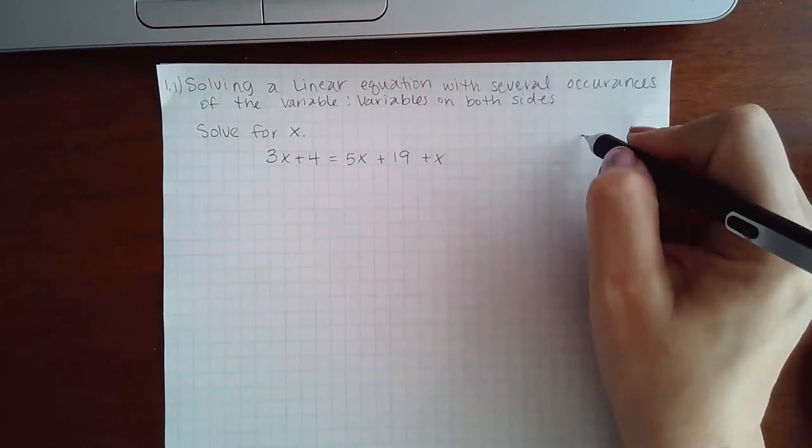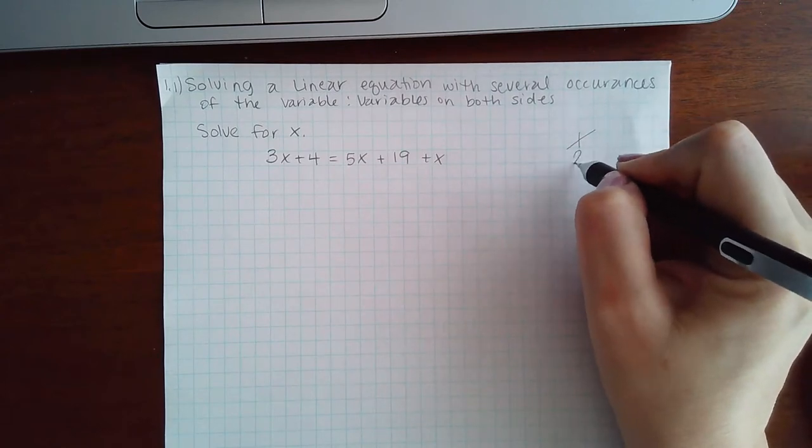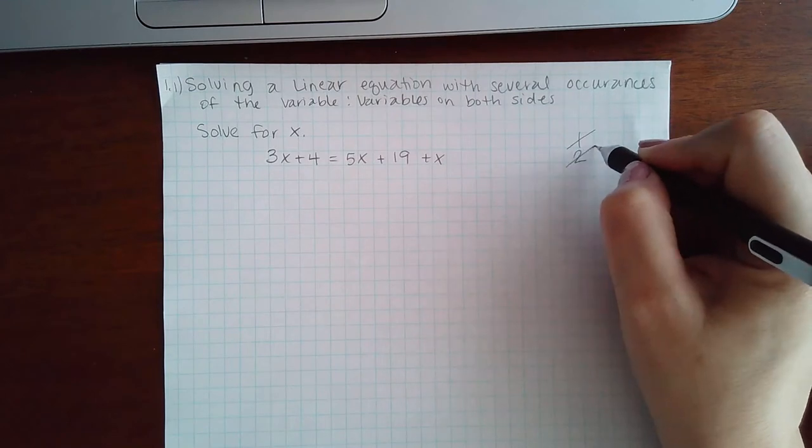So again, the six steps. First step is to eliminate fractions. I don't have any fractions to eliminate. Second step is to eliminate parentheses. I do not have any parentheses I need to eliminate.